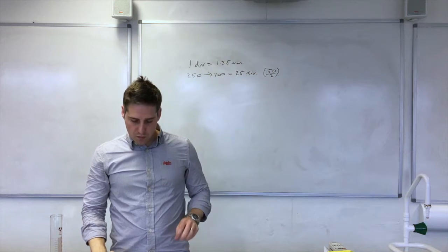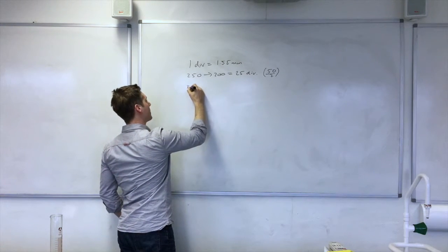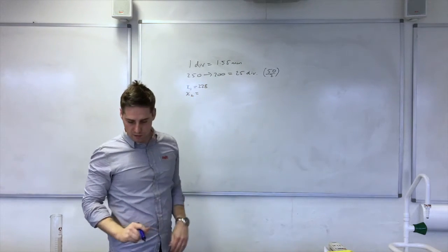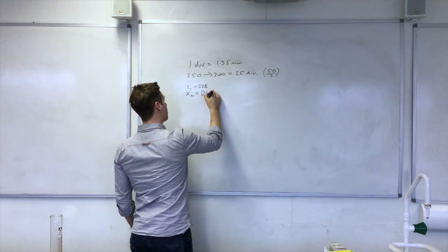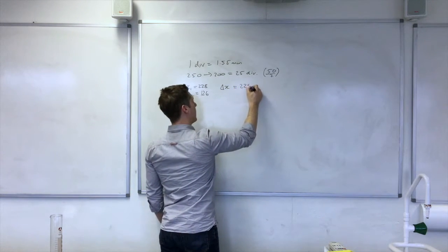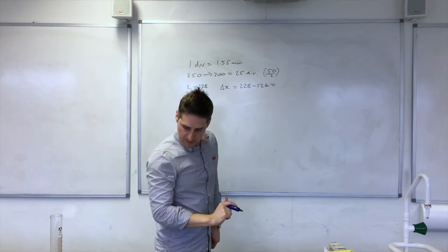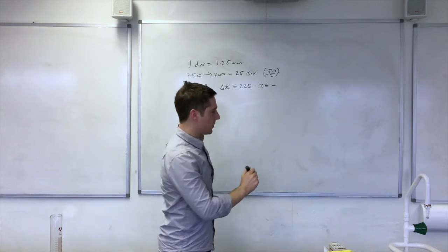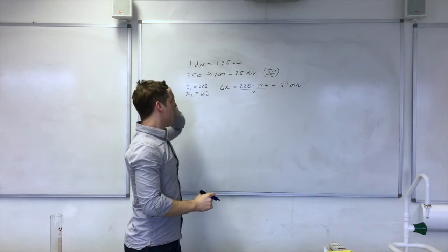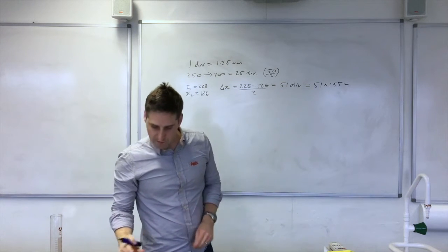So let's do the calculation for the terminal velocity. So x1 is 228, and x2, so it's at the highest point it's 228, and then sometime later it reaches 126. So delta x is 228 minus 126, and that is equal to 51 divisions. I've divided by 2, 51 divisions, and that is equal to 51 times 1.55 millimeters, which is 79.05.